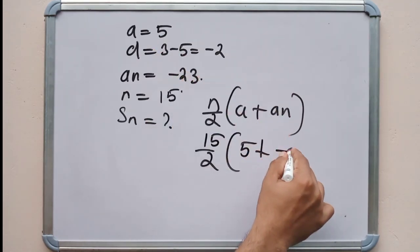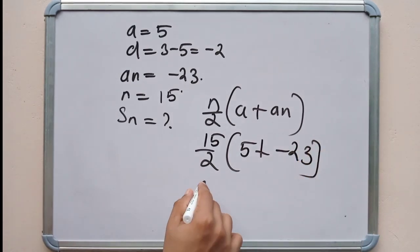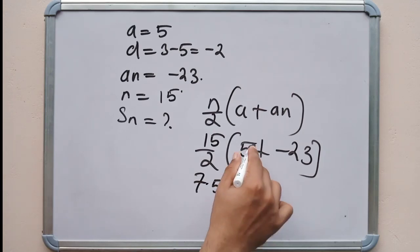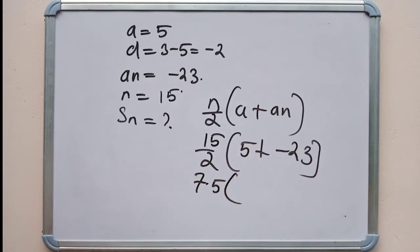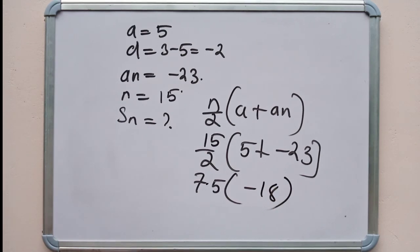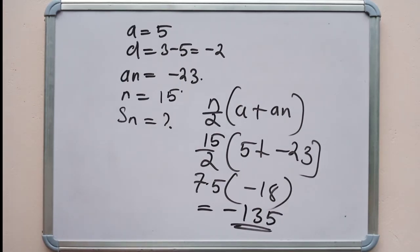With N equals 15, Sn equals 15 by 2 into (5 plus minus 23) equals 15 by 2 into minus 18, which equals minus 135.